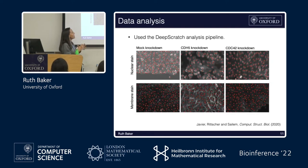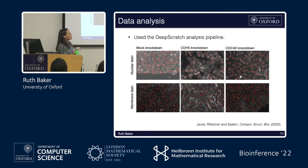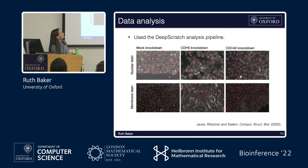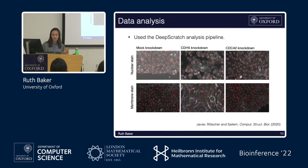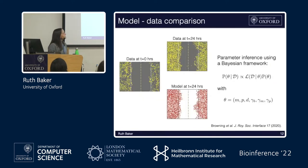To apply this model to the huge RNAi screen, we first needed a method to automatically extract information from the data — you can't do this by hand. We used Heber's deep scratch analysis pipeline, which detects cell centers using a nuclear stain, uses those locations to define the wound perimeter, and uses a Voronoi tessellation to establish a measure of cell size. This allows us to run all images through the pipeline in an automated sense and get a huge amount of quantitative information.